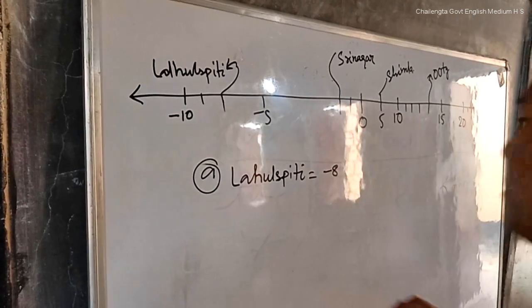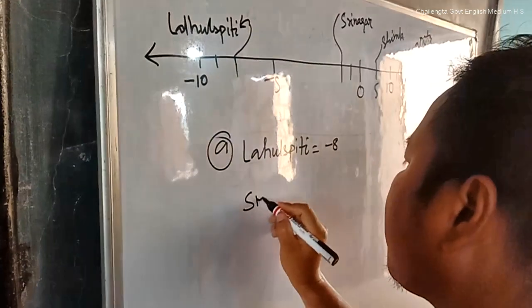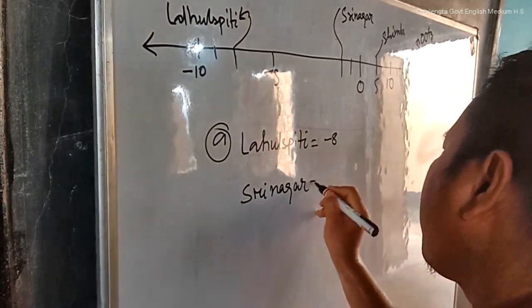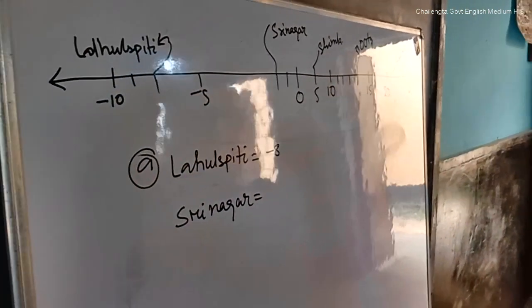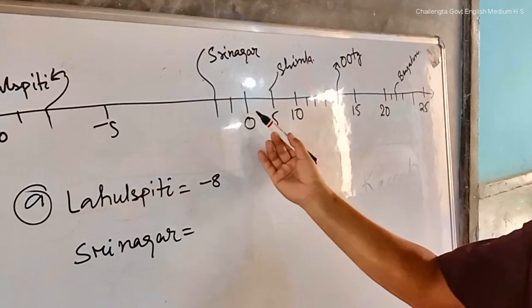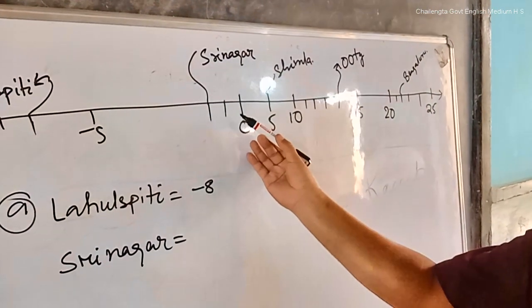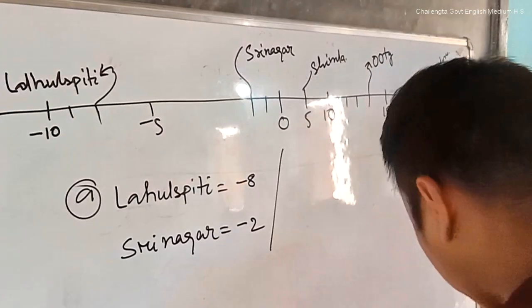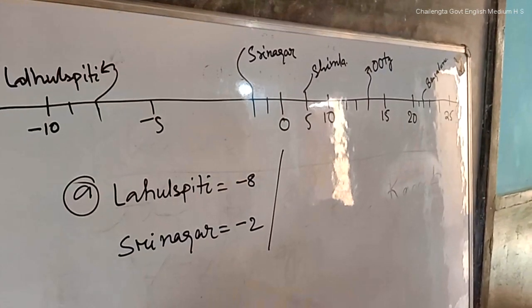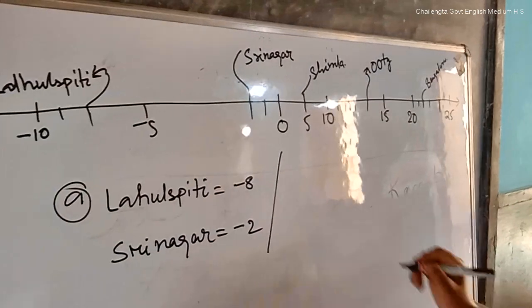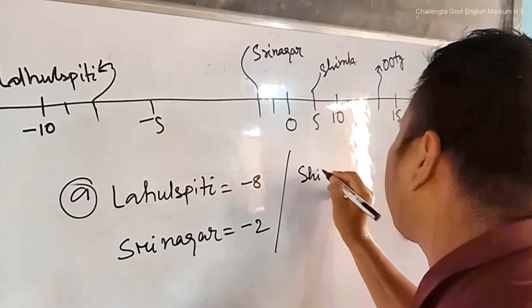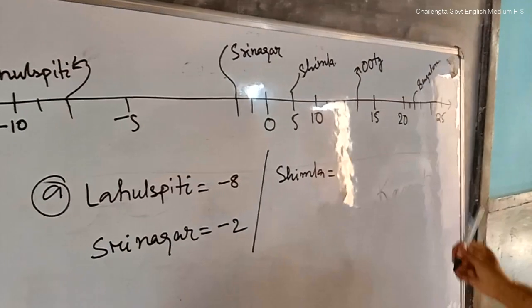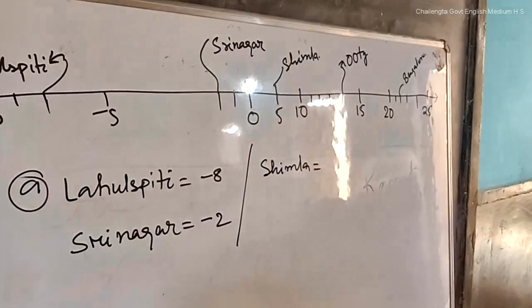Srinagar. Here we have 0, minus 1, minus 2. Srinagar's temperature is plus 5.